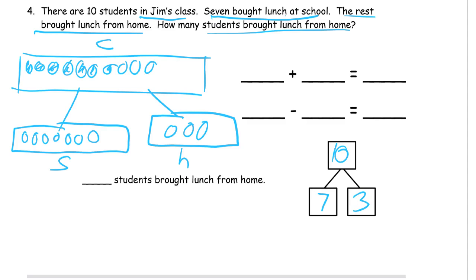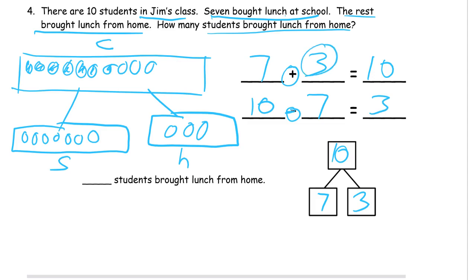We can take the two parts, seven and three, and use addition to put them together and get our total of ten. We can also use subtraction to take the total back apart — it's just like putting two Legos together to make a bigger Lego, then taking them apart. So ten minus seven equals three, which was the unknown — the students who brought lunch from home. We circle all the threes because that's the unknown.